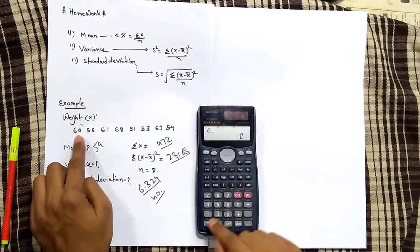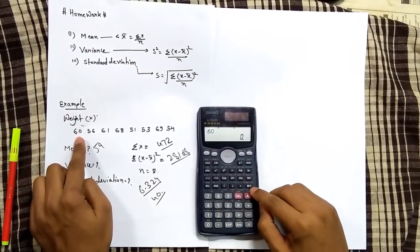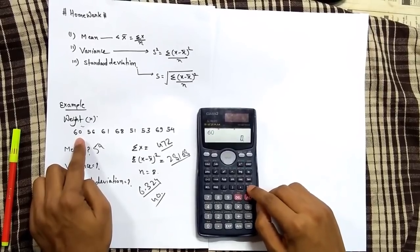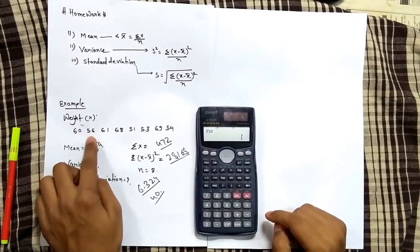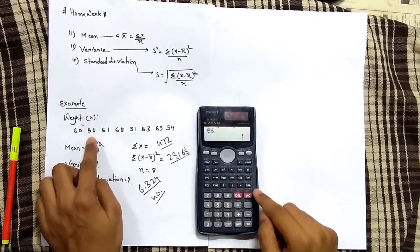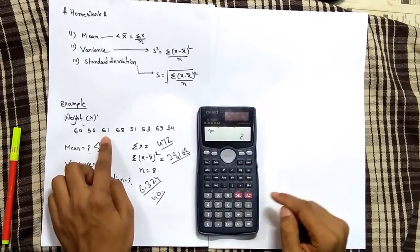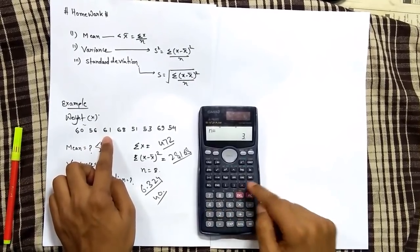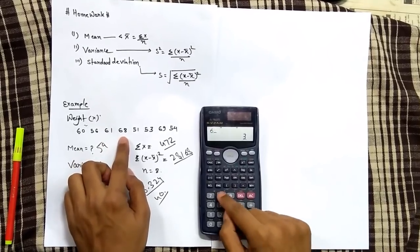Your first value is 60, so press 60 and then press M plus button. Then press your next value, then again press M plus, then press your next value and similarly proceed for all the values.